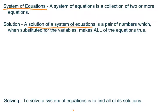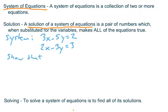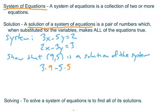So let me look at an example of this. Here's an example of a system of equations. There's going to be two equations in two variables. 3x minus 5y equals 2. And 2x minus 3y equals 3. That's a system of equations. And I want to show that the ordered pair (9, 5) is a solution of this system. And that simply means we're going to plug in 9 for x and 5 for y in both of these equations like this.